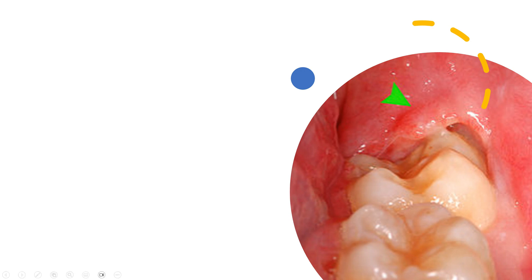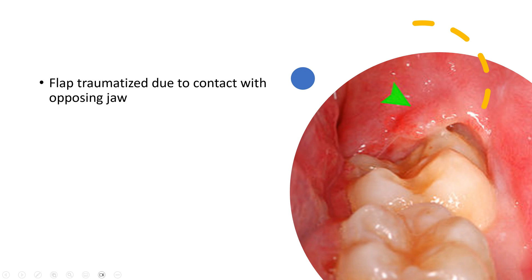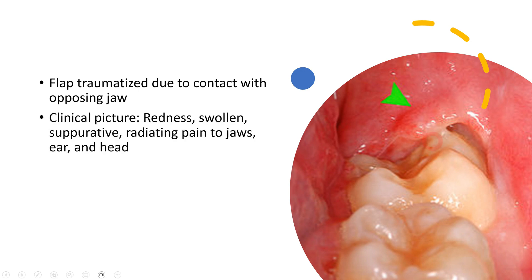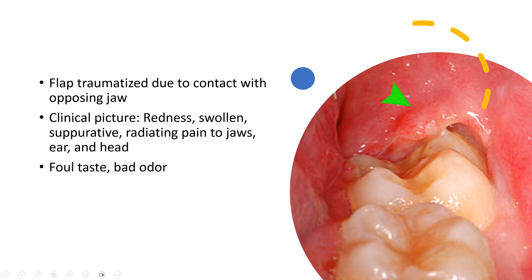The inflamed operculum flap contacts the opposing jaw — the maxillary third molar hits this area when the patient closes their mouth, leading to further pain and swelling. Clinically, pericoronitis presents with redness, a swollen structure, and sometimes suppuration — pus accumulation is an important feature. The pain mainly radiates to the jaw, ear, head, and sometimes the neck, so patients seek immediate treatment. Additionally, patients experience a foul taste due to pus drainage, which also leads to bad odor.